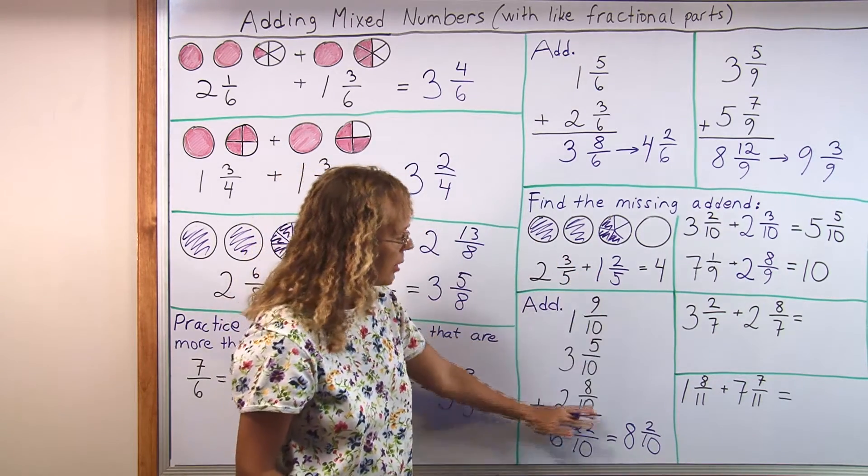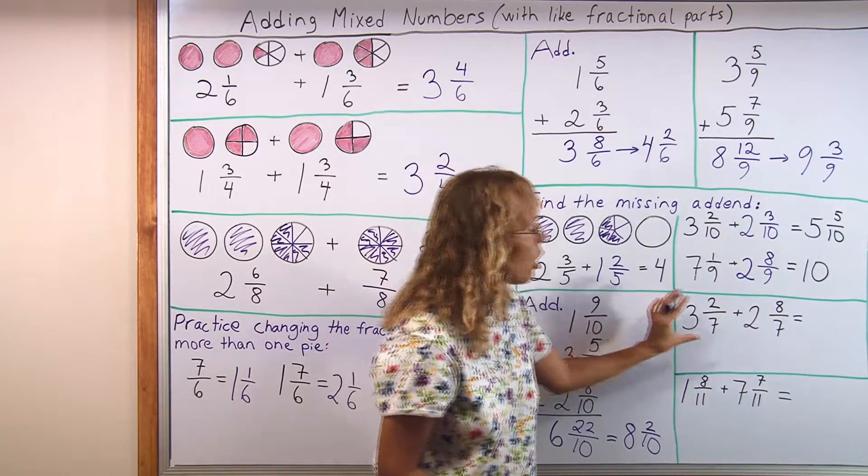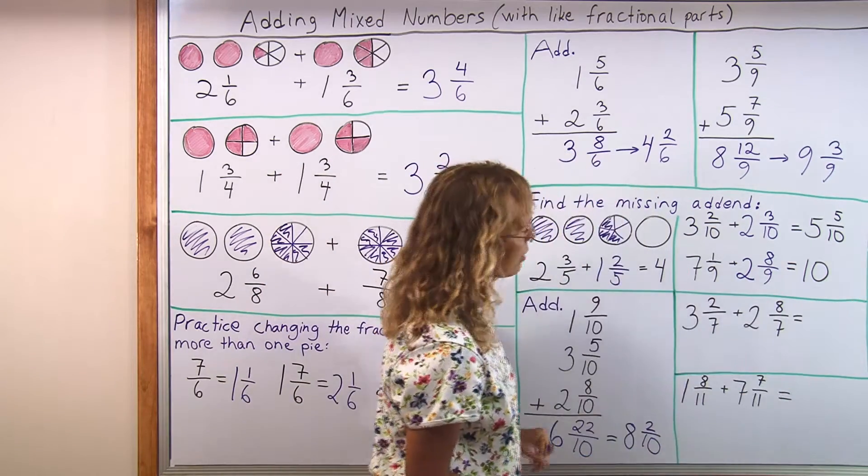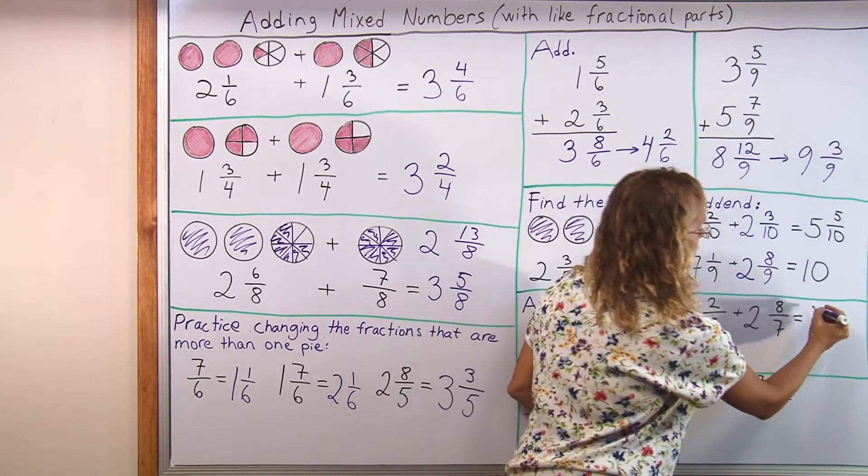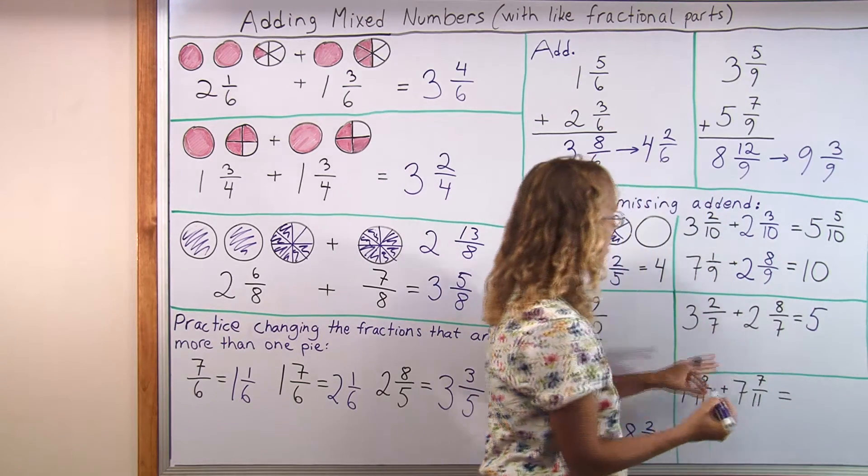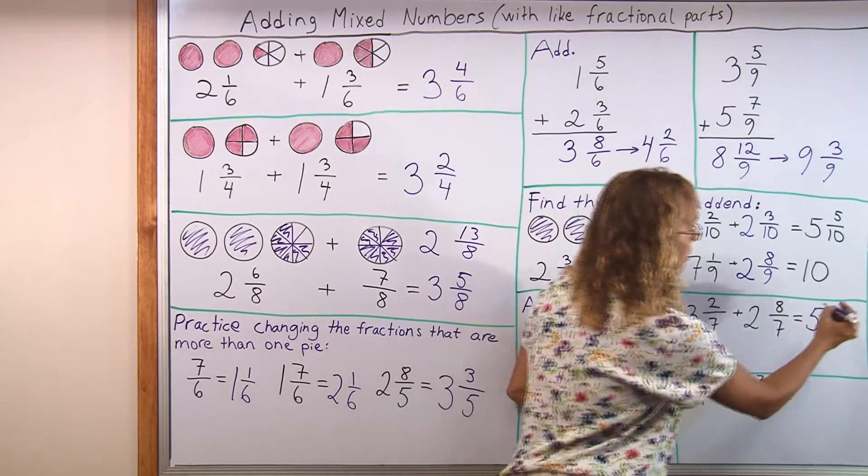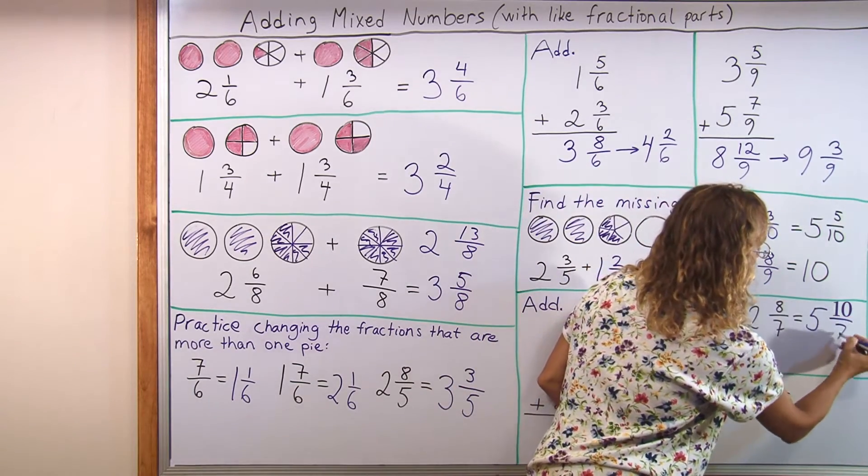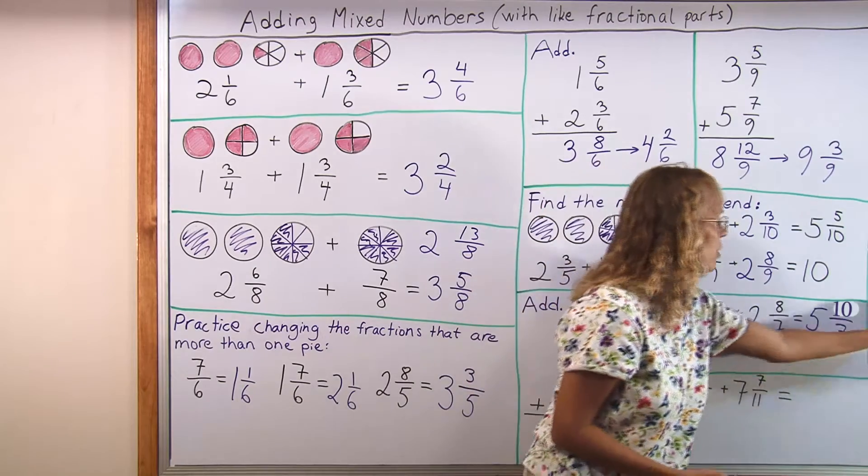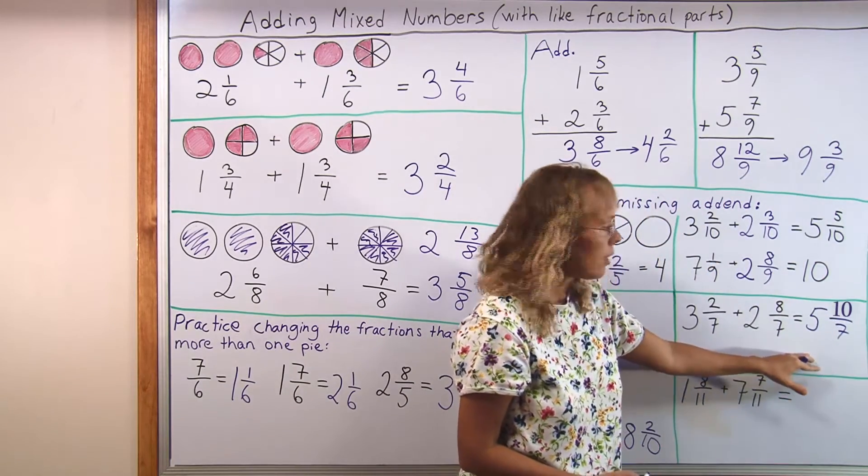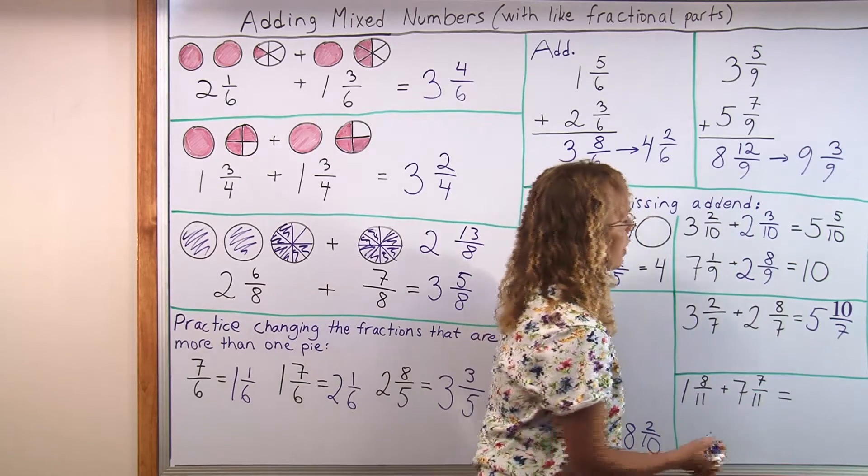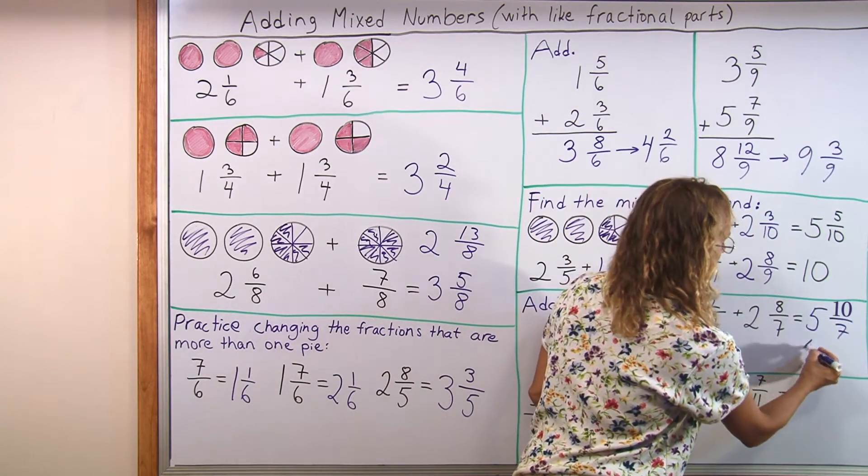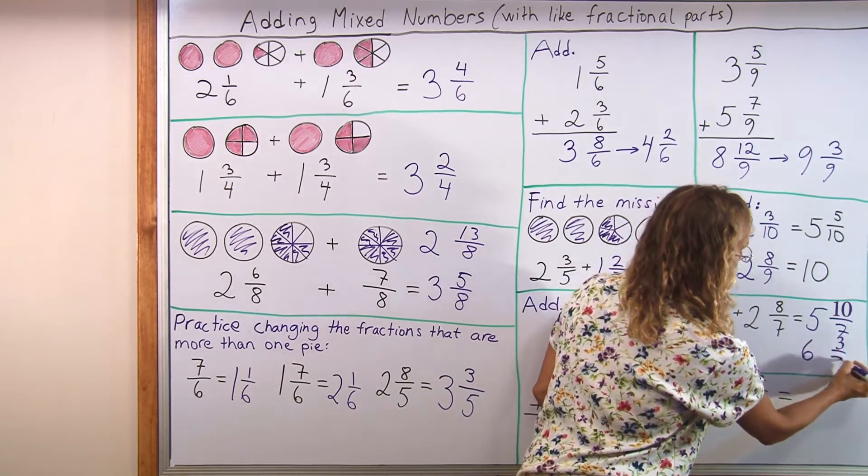And these same addition problems can be written horizontally too. And we can work it this way. Let's add 3 and 2, which is 5. And then add the 2 sevenths and 8 sevenths to get 10 sevenths. And then the student can continue writing that way or write under here when they're changing this improper fraction. It gives us 1 more whole pie and then 3 sevenths.